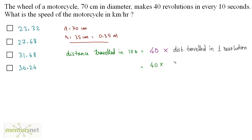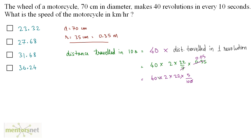The distance travelled in 10 seconds equals the number of revolutions times the distance travelled in 1 revolution, which is the circumference of the circle. So 40 times 2πr: that's 2 × 22/7 × 0.35. Since 7 × 0.05 gives 0.35, we can write 40 × 2 × 22 × 5/100. The zeros cancel, 5 × 2 is 10 and the 2s cancel, leaving 22 × 4 = 88 meters.